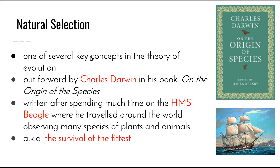After spending much time on the HMS Beagle, where he travelled around the world observing many species of plants and animals — including coming to Australia where he observed the platypus, the magpie, and eucalypt species — and then going to the Galapagos Islands and observing the finches on the different islands in that chain, he came up with his theory of natural selection: that organisms evolved over time based on their environment.